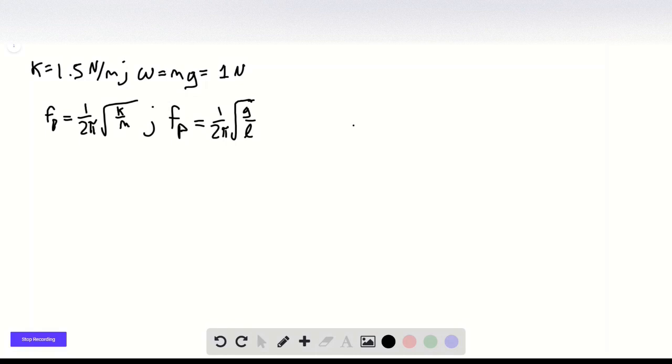And in the problem, it's given that F_P equals 1 half F bounce.